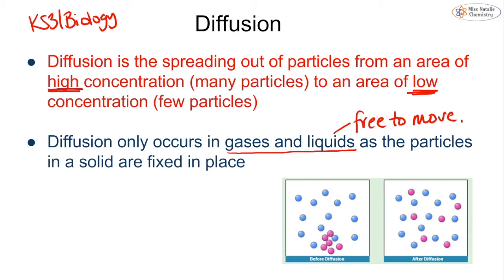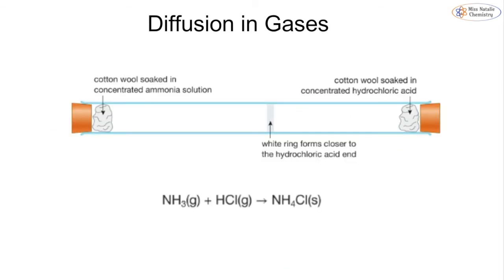In the diagram shown, the pink molecules — perhaps a substance dropped into water or sprayed in a room — are all close together at the start, while the blue particles are spread out. After diffusion, the pink and blue particles become randomly mixed, with the pink particles spreading throughout the blue particles to give a uniform mixture.